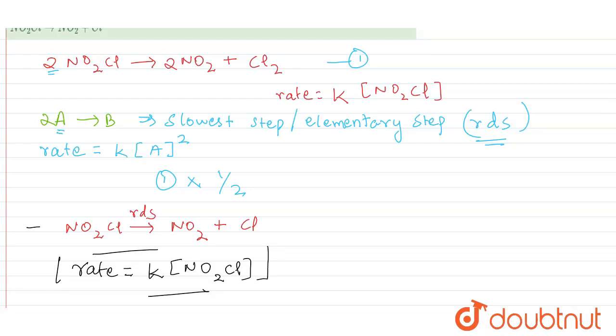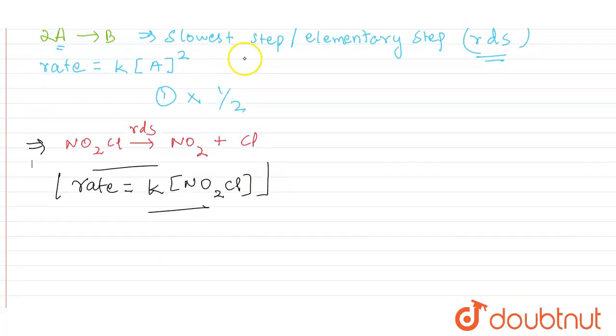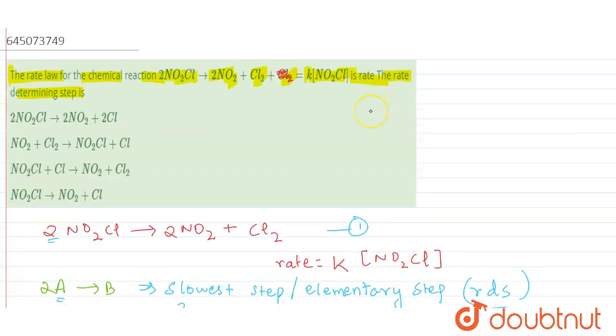So let's check the option in which this reaction is given. If you see option number 1, we have 2NO2Cl giving 2NO2, 2Cl. So 2 is there. So this is incorrect.